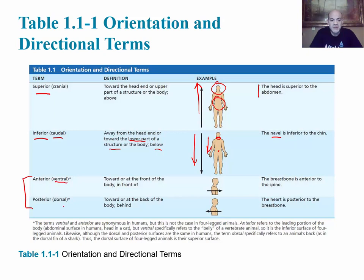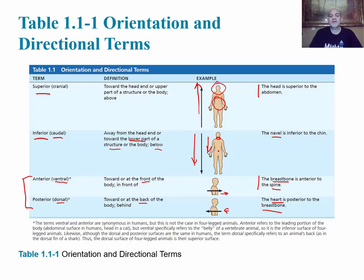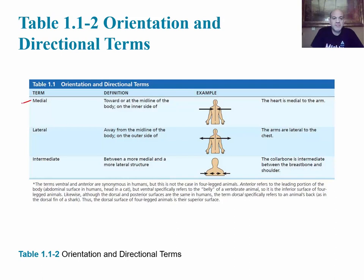Anterior means toward the front and posterior means toward the back. In humans who stand upright, the front is the belly or ventral side, and the back is the dorsal side, so the terms can be used interchangeably. An example of anterior: the breastbone, or sternum, is anterior to the spine. A posterior example: the heart is posterior to the breastbone — the sternum is in front and the heart is behind it.